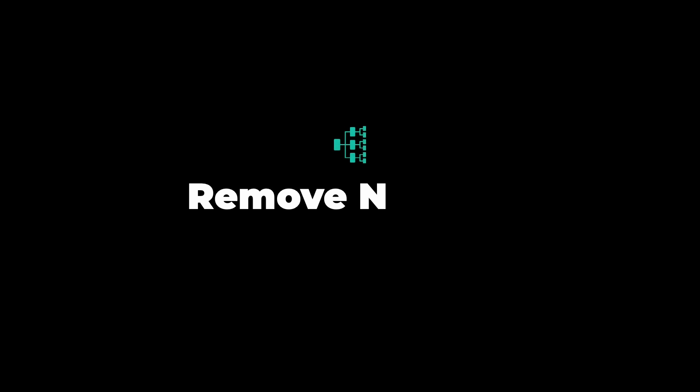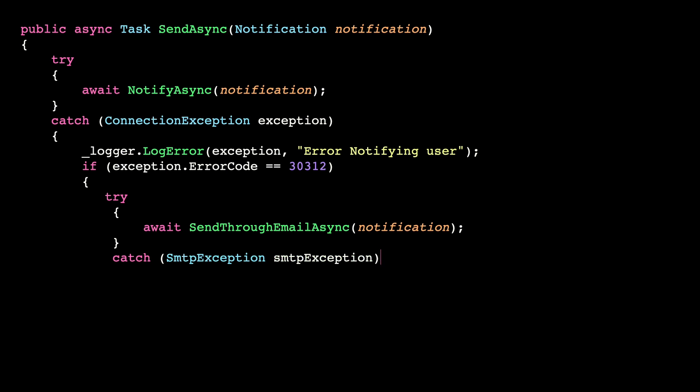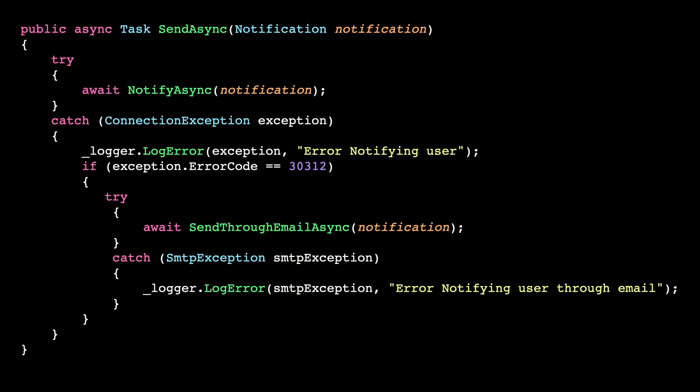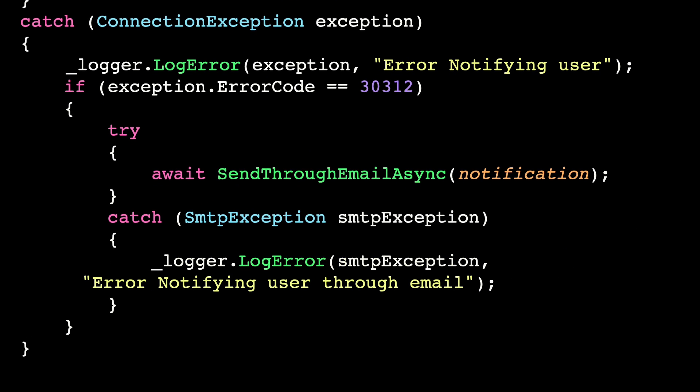The next tip is to remove nesting. Sometimes we find code like this — where inside of a try-catch, we have another try-catch. This type of code is extremely hard to understand and to read.